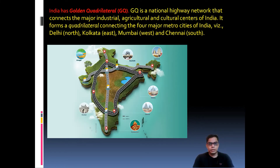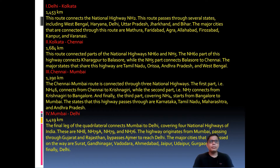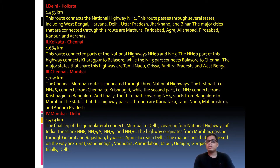The Delhi to Kolkata segment of the Golden Quadrilateral has a length of 1,453 kilometers. This route connects via National Highway 2 (NH 2) and passes through several states including West Bengal, Haryana, Delhi, Uttar Pradesh, Jharkhand, and Bihar. Major cities connected along this route include Mathura, Faridabad, Agra, Allahabad, Firozabad, Kanpur, and Varanasi.